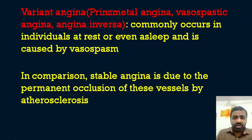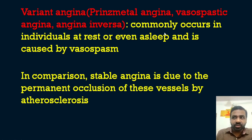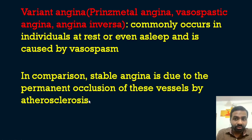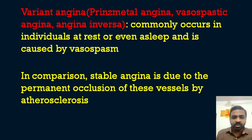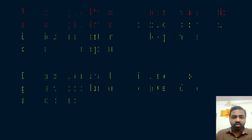Variant angina is otherwise known as Prinzmetal's angina, vasospastic angina, or angina inversa. It commonly occurs at rest or even during sleep and is caused by vasospasm. Stable angina is due to permanent occlusion of vessels by atherosclerosis, whereas variant angina is caused by vasospasm.